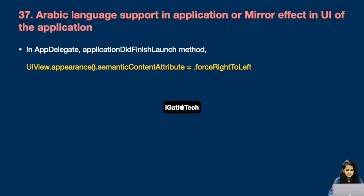Question number 37: Arabic language support in an application, or mirror effect in the UI. To achieve this, in the AppDelegate in the applicationDidFinishLaunching method, we write: UIView.appearance().semanticContentAttribute = .forceRightToLeft. This will create a mirror effect in your UI.